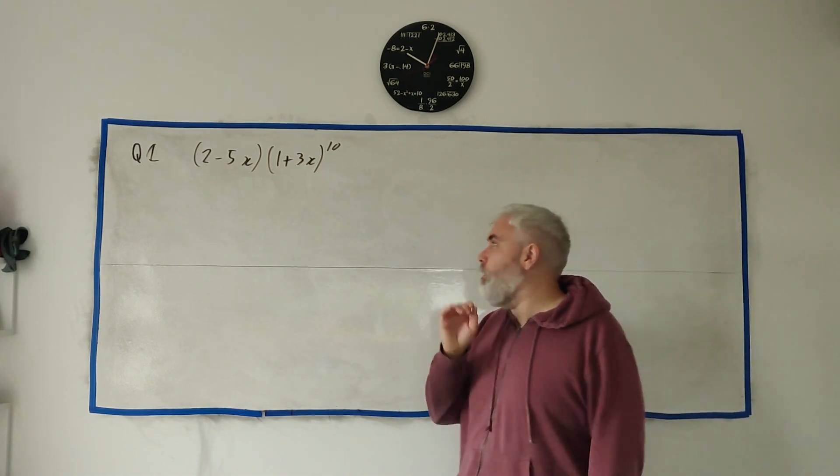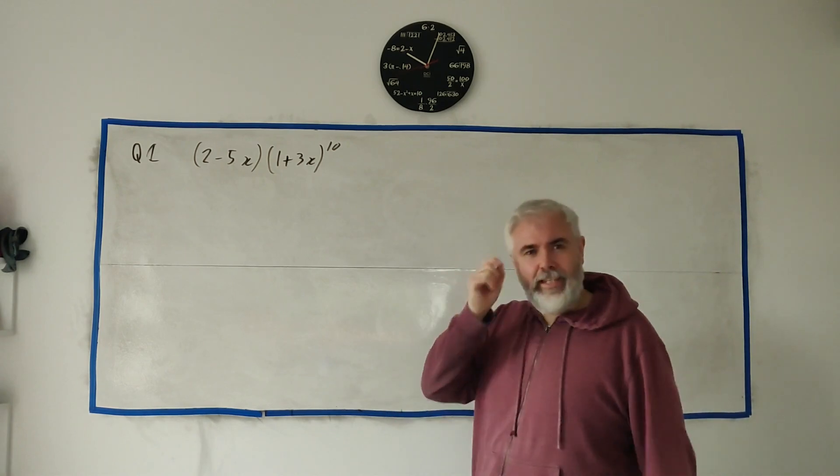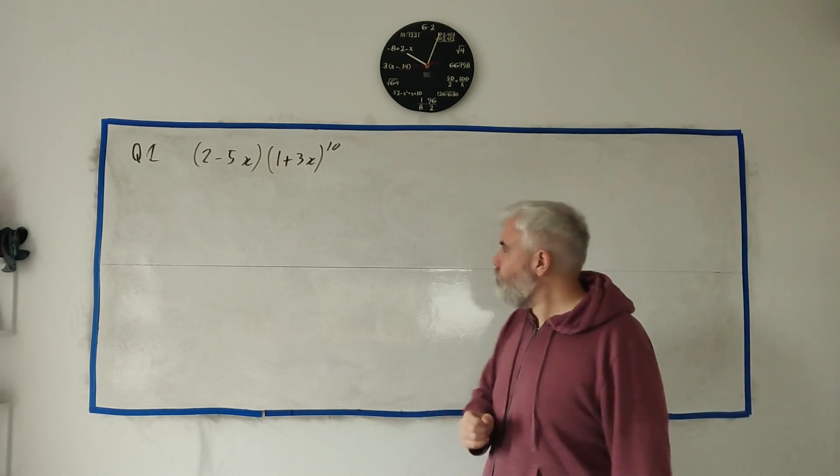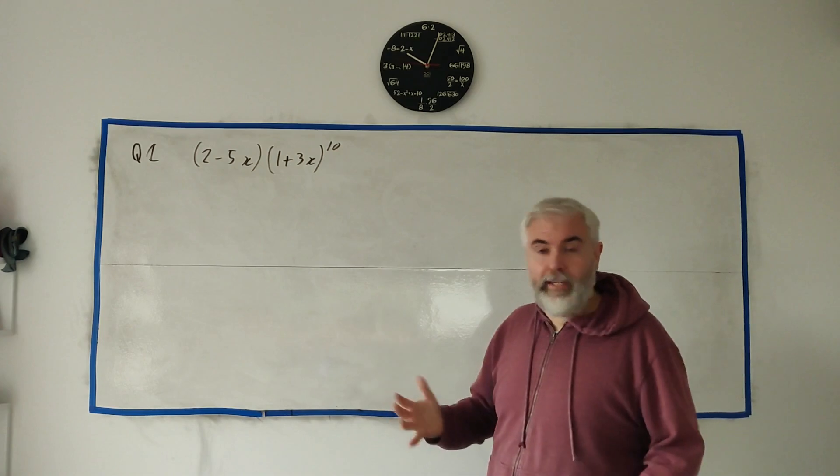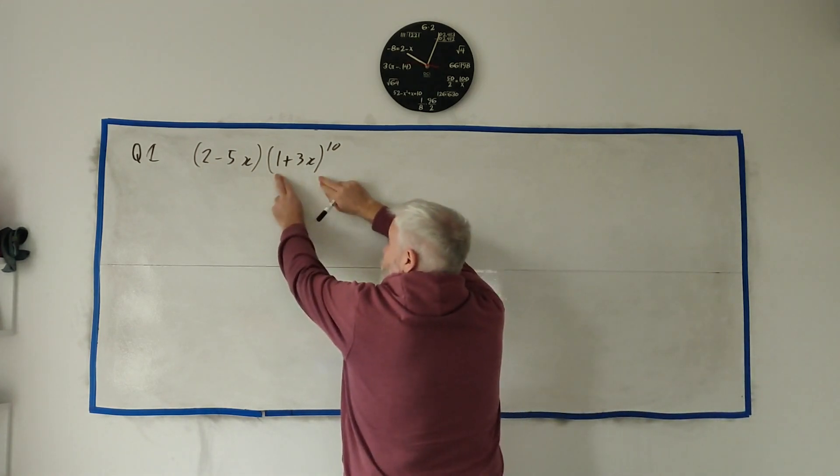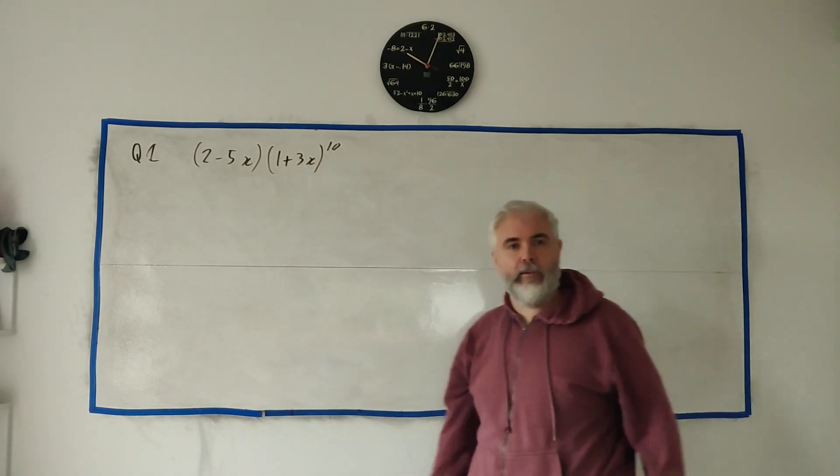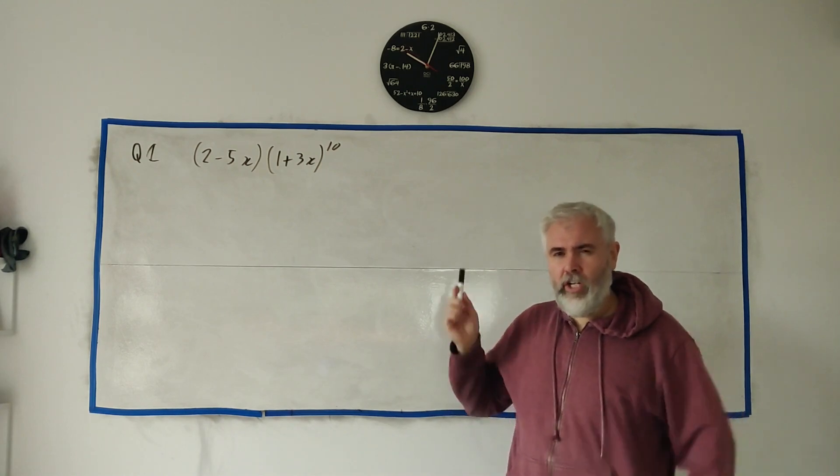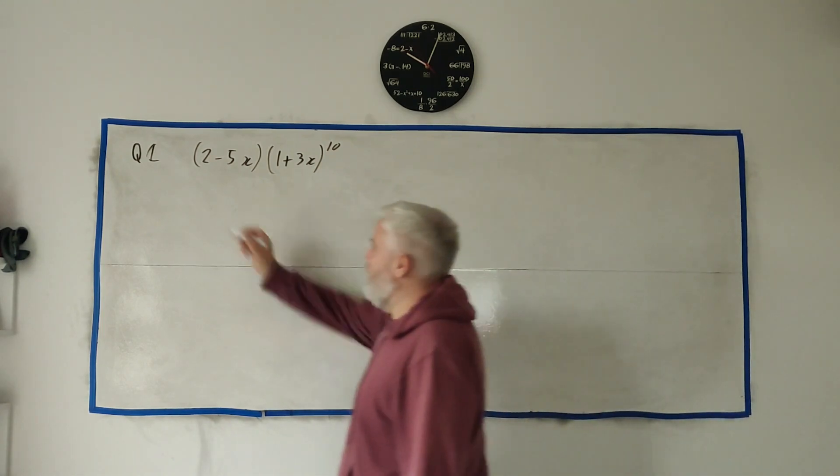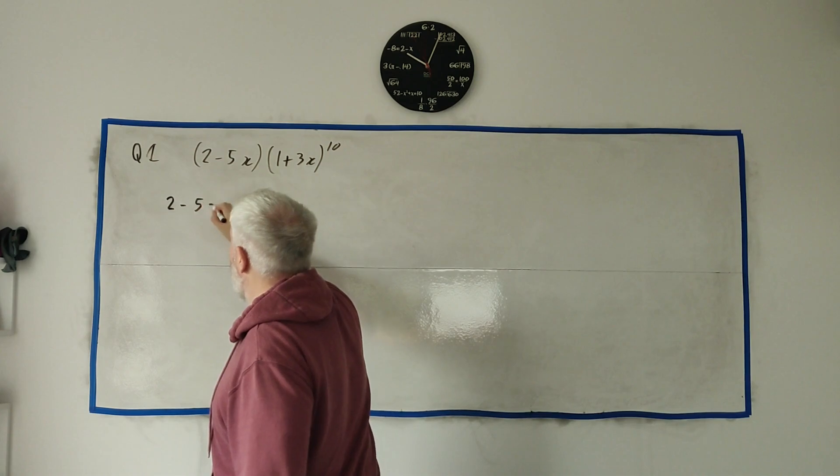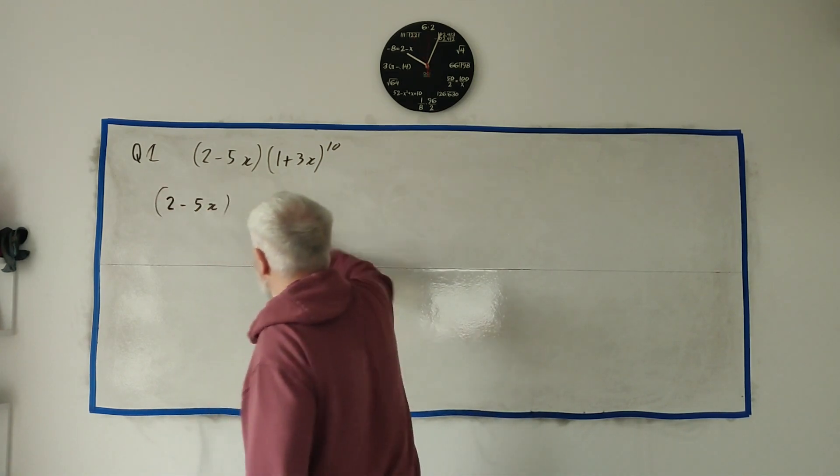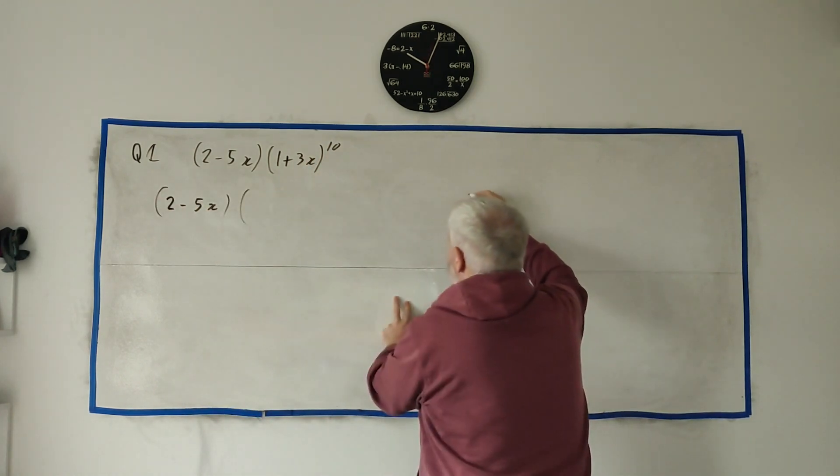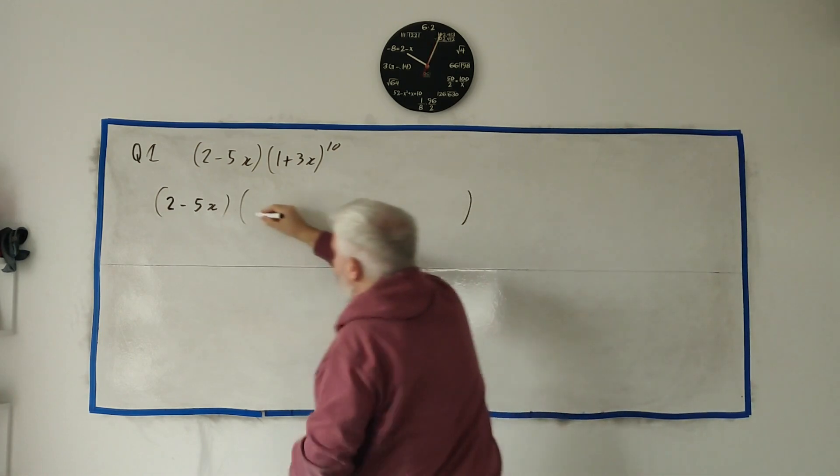Before we do that, we need to think through what we're looking for, because what are we expanding out? The only one really is this second term here. We're going to expand that out, but remember we're not going to look for the x squared part of that, because we're still going to multiply it by this guy here.